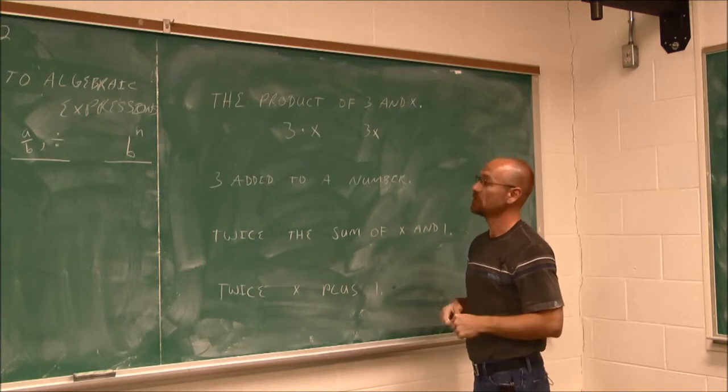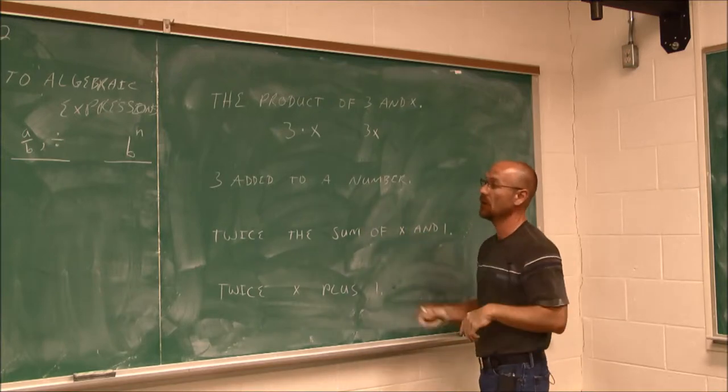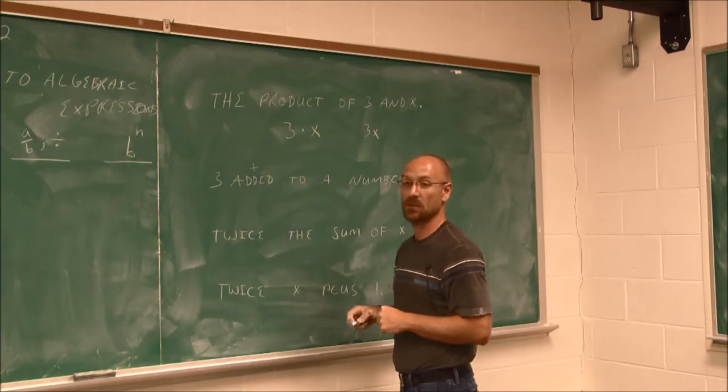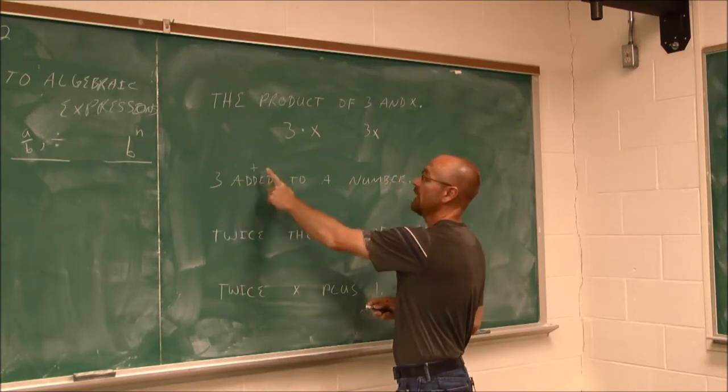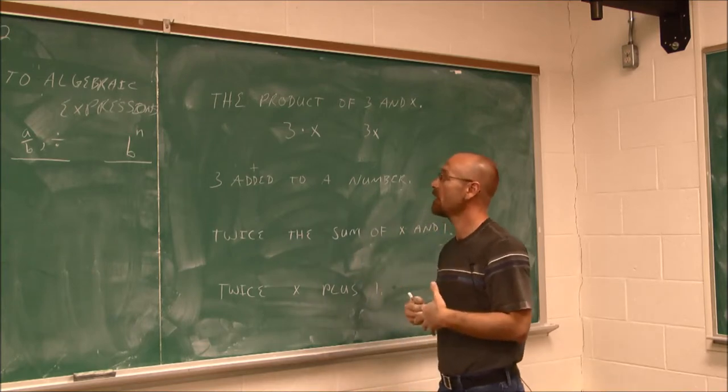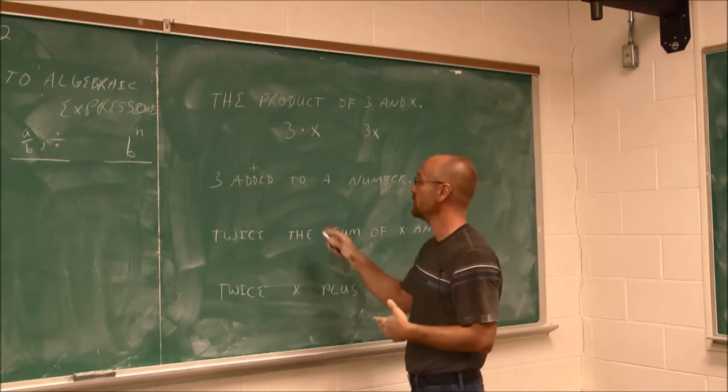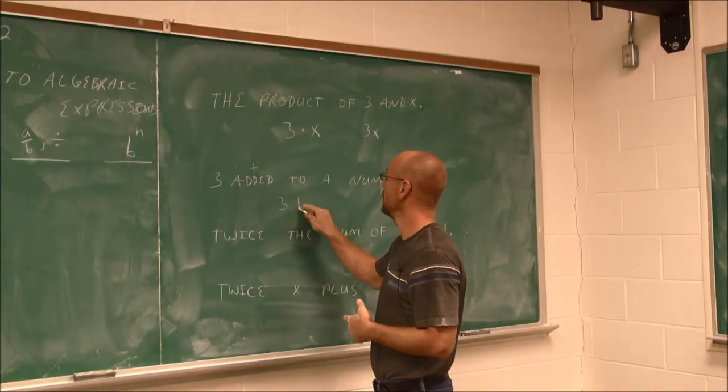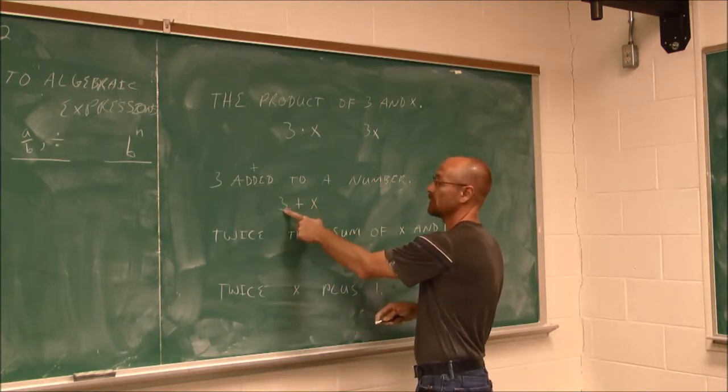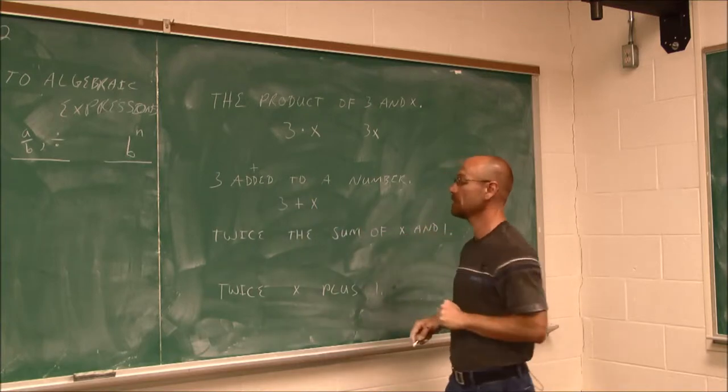All right, let's look at the next one. 3 added to a number. Well, added, I know what mathematical operation that is. It is that plus sign, right? 3 added to a number. Well, I don't know what the number is, so I have to assign a variable. So I'm going to say 3 plus a number. And that's exactly what that says.